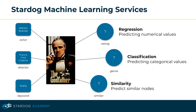Stardog machine learning services include services on regression — an algorithm in supervised machine learning that can be trained to predict numerical values and outputs — classification, an algorithm in supervised machine learning that is trained to identify categories and predict categorical values, and similarity, which is an area of supervised machine learning closely related to regression and classification, where the goal is to learn a similarity function that measures how similar or related two objects are and can be applied in problems such as ranking and recommendation systems.